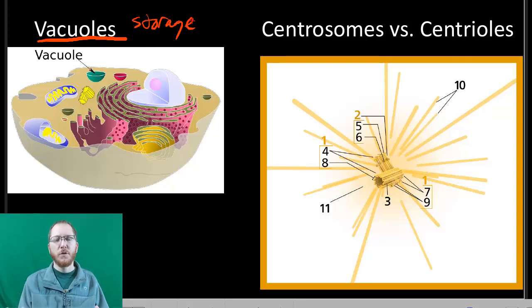We'll have food vacuoles a lot in animal cells where that's where the bacteria would be like waiting, because you'd wrap the bacteria when you ingest it. You'd wrap it up in your membrane, so there'd be a membrane around the bacteria. And then you just merge a lysosome, a peroxisome with the food vacuole, and then break it down.